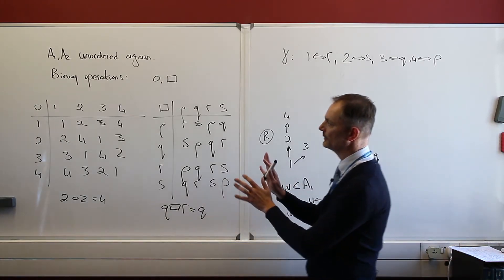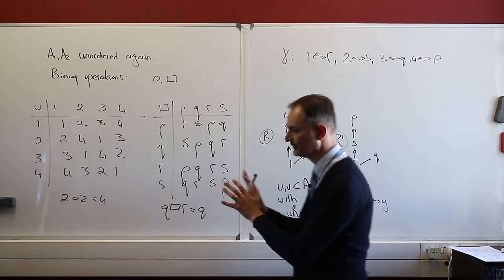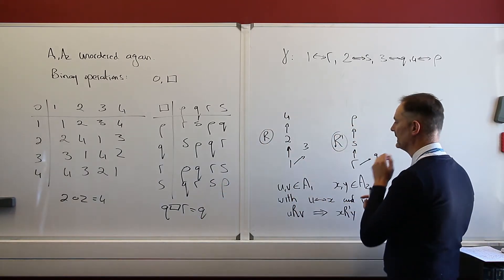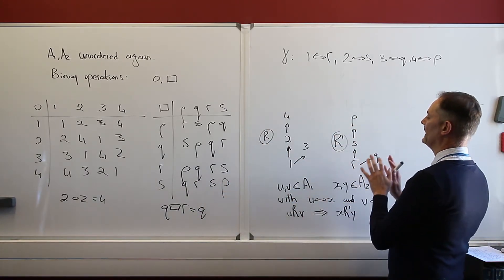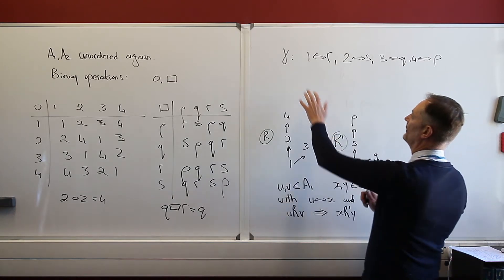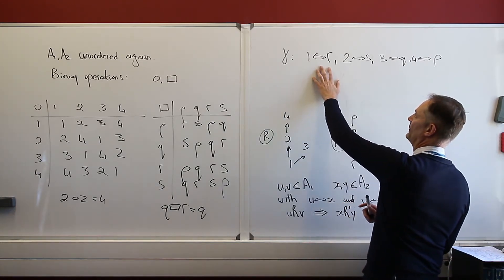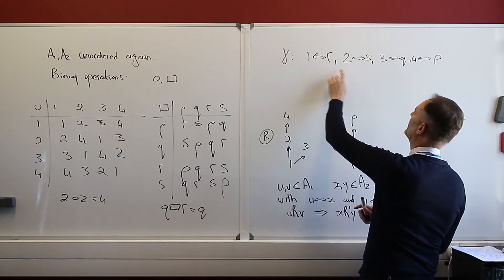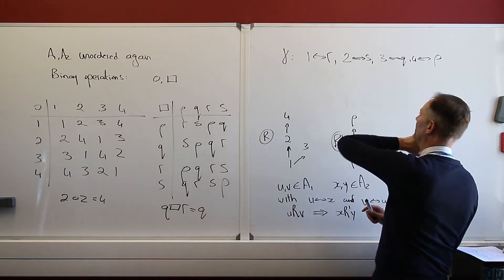What we are doing now is we're moving on to binary operations. So we set up these binary operations. And imagine now I have the following of one of my 24 mappings, which have a 1 to 1 correspondence. So 1 to r, 2 to s, 3 to q, 4 to p.